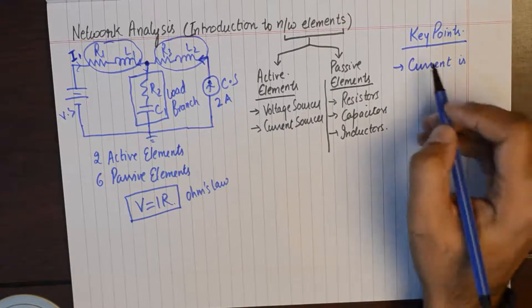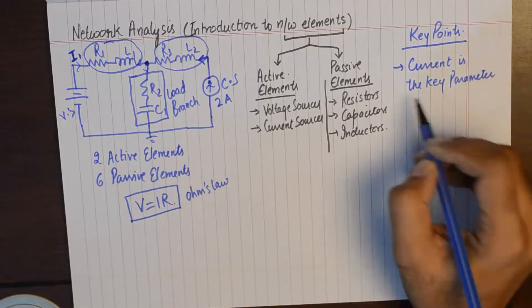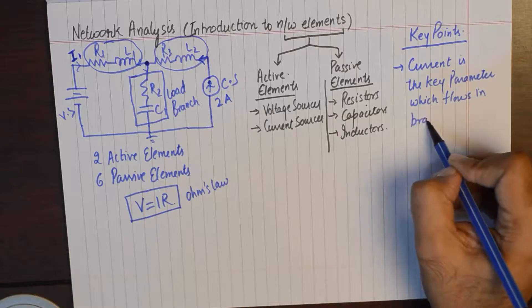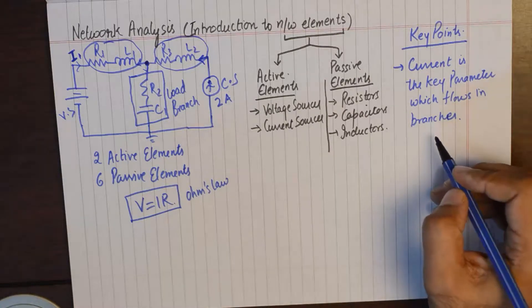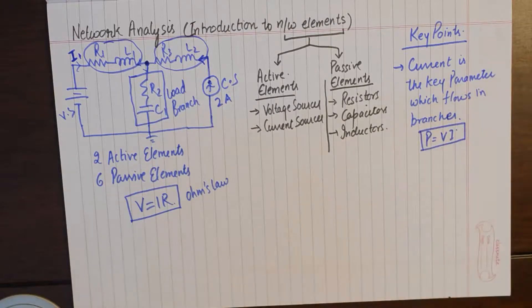Current is the key parameter which flows in branches. So if we are able to calculate current in each of the branches in a network, then we should be able to calculate how much energy is being dissipated because we have another formula for power dissipation which essentially requires the current as one of its calculating parameters.